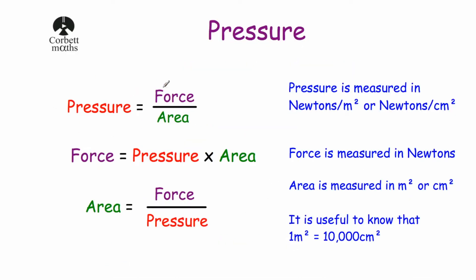Pressure is calculated by force divided by area. If we take the force and divide it by the area, we'll find the pressure. We can multiply both sides of the formula by area, which gives us that force is equal to pressure multiplied by area.